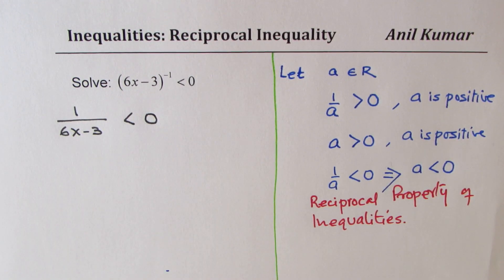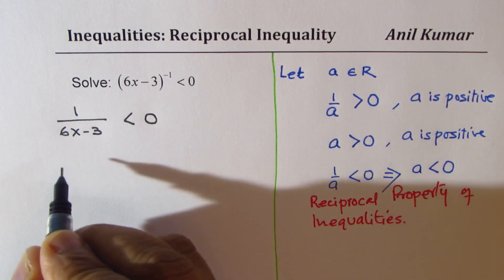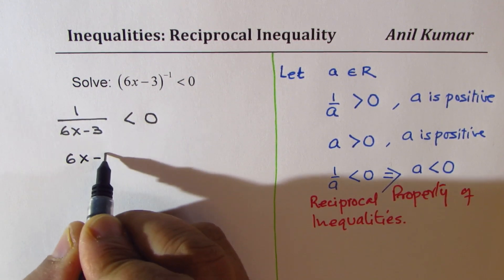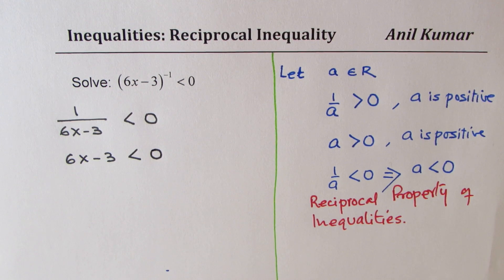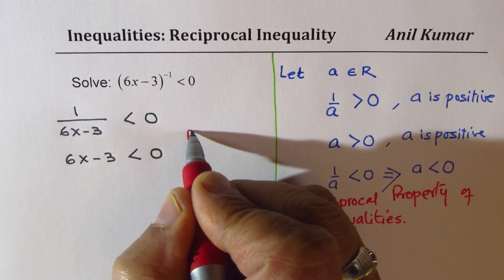It means that 6x minus 3 is also less than 0. This is from the reciprocal property.